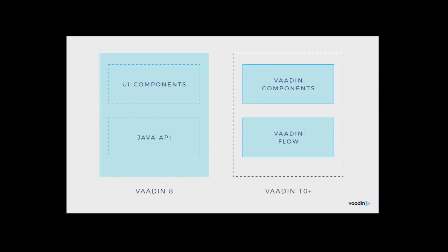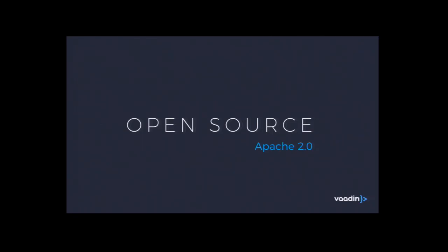We did an architectural overhaul recently. We had a fairly monolithic structure before where all the components and the Java connection were one big package. Now we've split these into two, so for every component we list how to use it from HTML or how to use it through the Java API. Vaadin is an open source product, Apache 2 licensed. Around 40% of Fortune 100 companies are using it, and we have roughly 150,000 developers in our community - especially for larger enterprise applications where this type-safe way of building UIs makes a lot of sense.